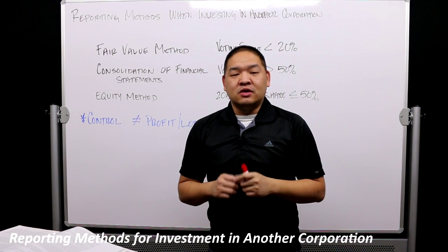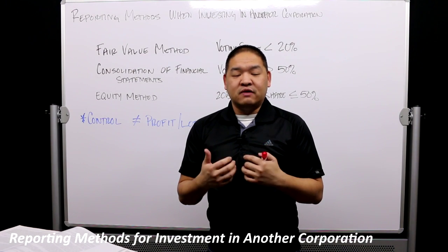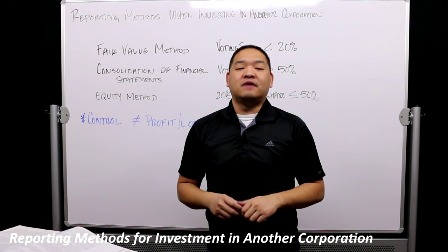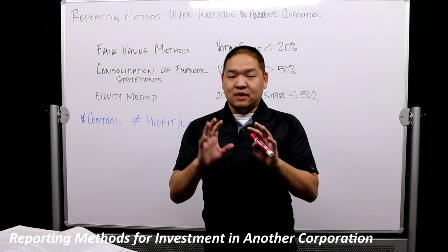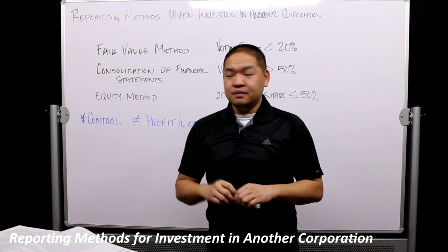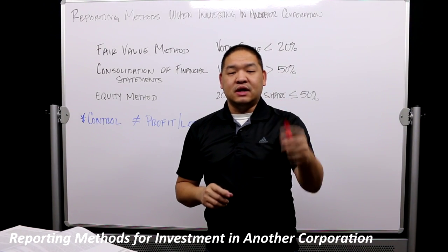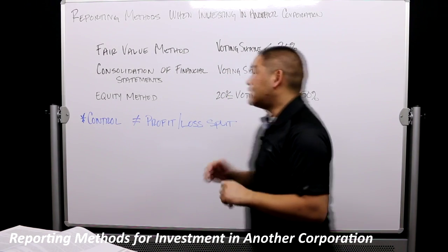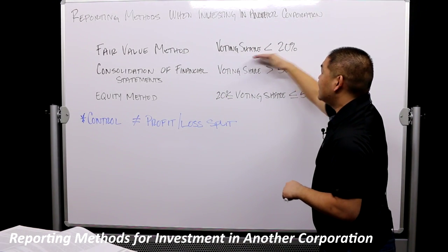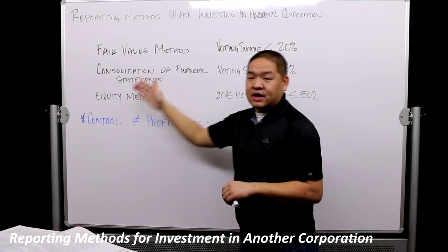One key difference with the fair value method is how we treat dividends. When we receive dividends, we report them as income. Unlike other methods that may handle dividends differently, with the fair value method dividends received become income to us. This method is used when voting shares are less than 20%.